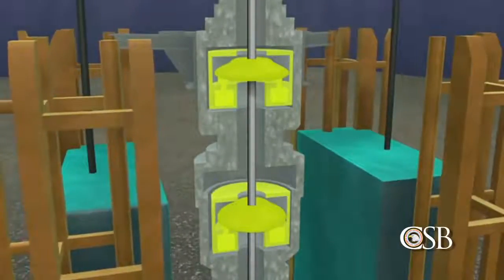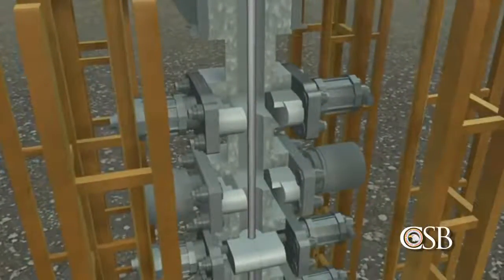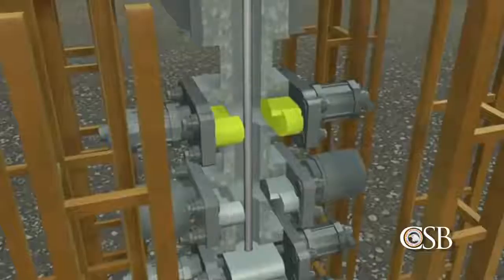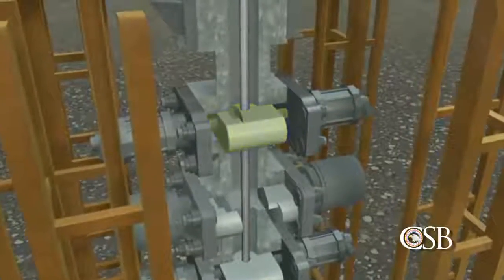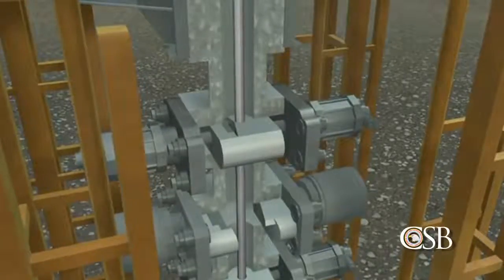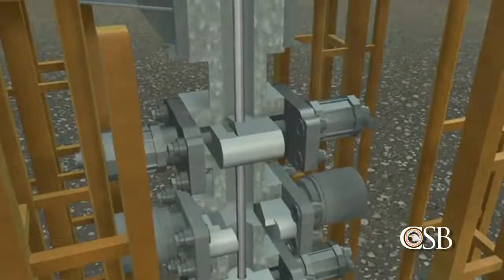If those devices should fail to work, the last resort is a pair of sharp metal blades which form a blind shear ram designed to cut the drill pipe and seal the well. The blind shear ram can be activated manually or by automated emergency systems.